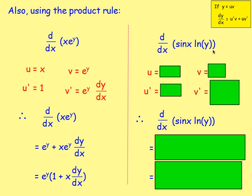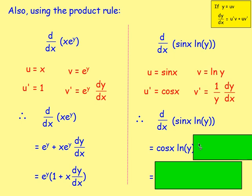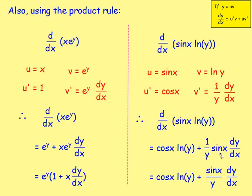If we're differentiating sin x times ln y, it's one function times another, so we use the product rule. u is sin x, u' is cos x. v is ln y, v' is (1/y) dy/dx. Using the product rule, u'v plus uv' gives cos x times ln y, plus sin x times (1/y) dy/dx. Tidying up the fraction, that becomes cos x ln y plus (sin x / y) dy/dx.